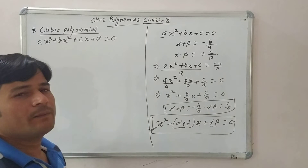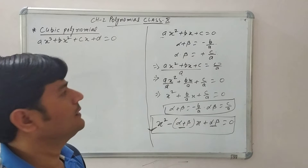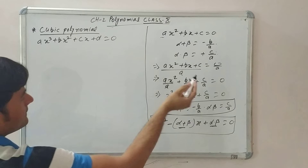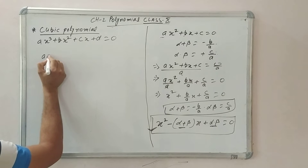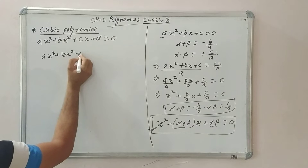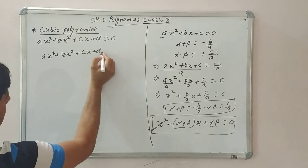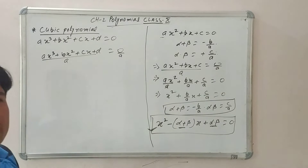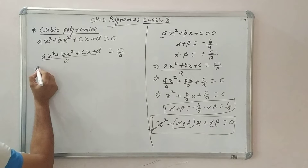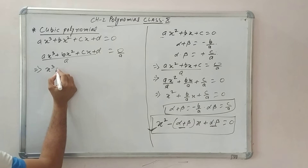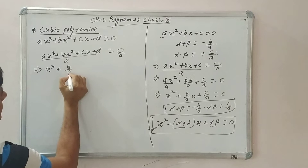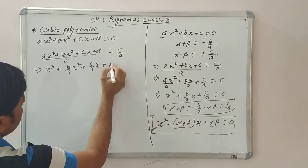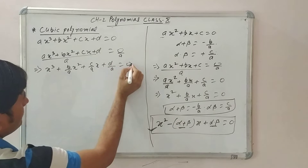Just as with quadratics, we will divide both sides of ax³ + bx² + cx + d = 0 by a (the coefficient of x³). This gives us x³ + (b/a)x² + (c/a)x + (d/a) = 0.